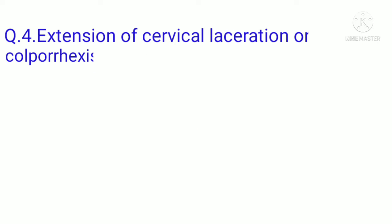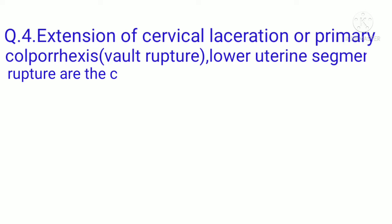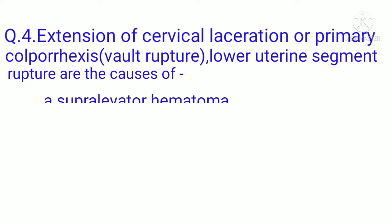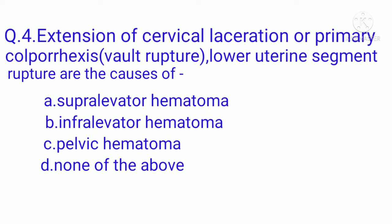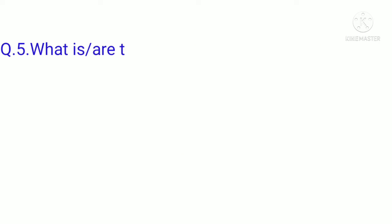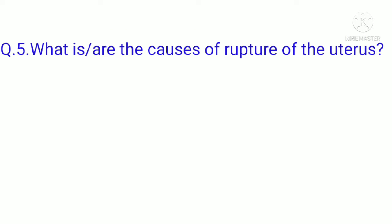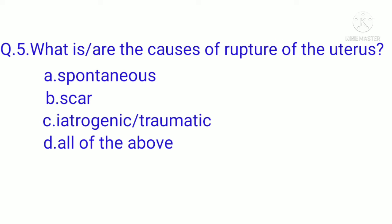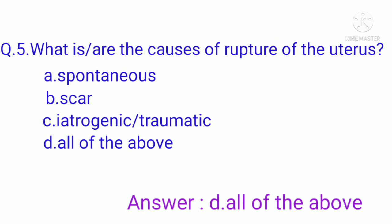Question 5: What are the causes of rupture of the uterus? Option A: spontaneous. Option B: scar. Option C: iatrogenic or traumatic. Option D: all of the above. The correct option is D, all of the above.